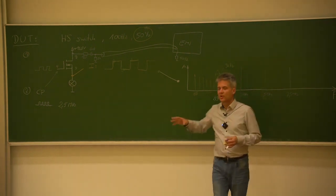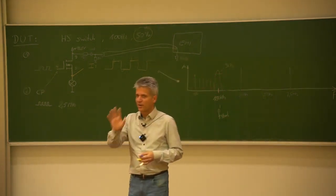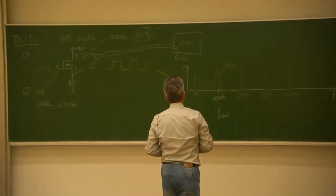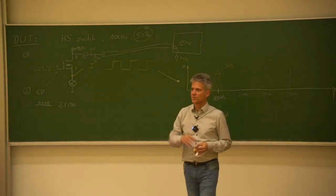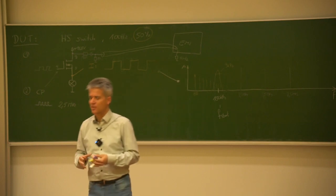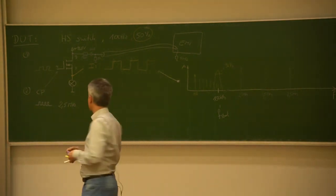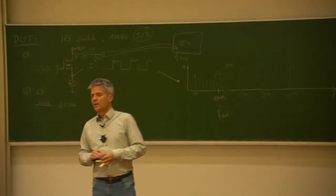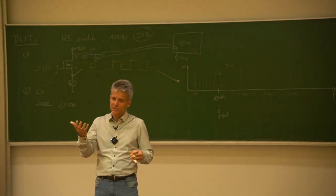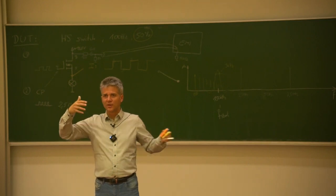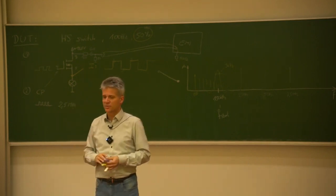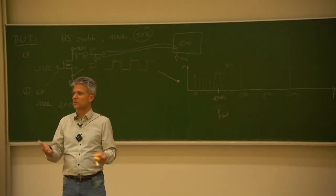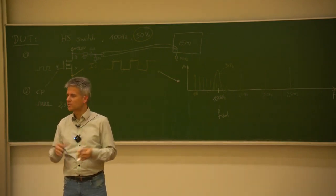Now we need to talk about what is happening inside the EMI receiver and what the final result displayed on the screen will be. We need to talk about the internal detectors that we can choose to rate our signal. Have you ever heard about detectors inside the EMI receiver? This comes from the old-fashioned radio frequency interference topics. Detectors are used to rate how big the noise is or how important the interference is, and there are different kinds of detectors.